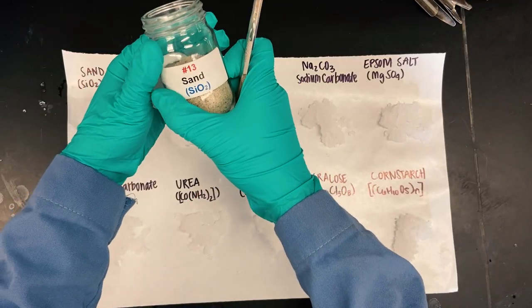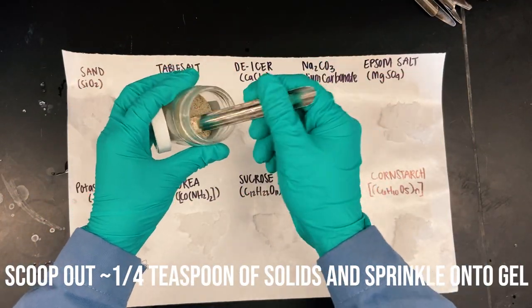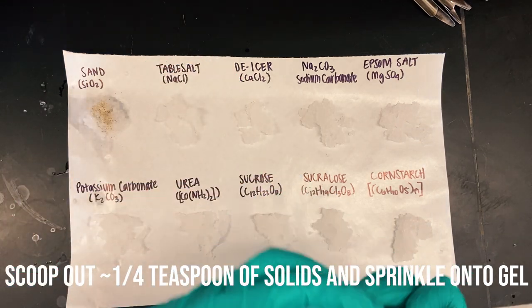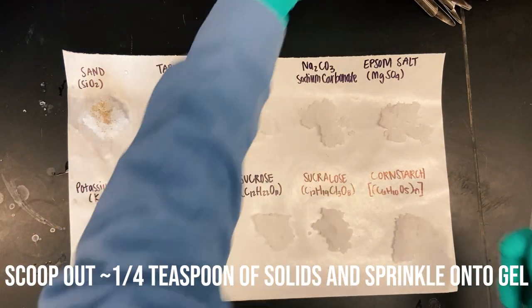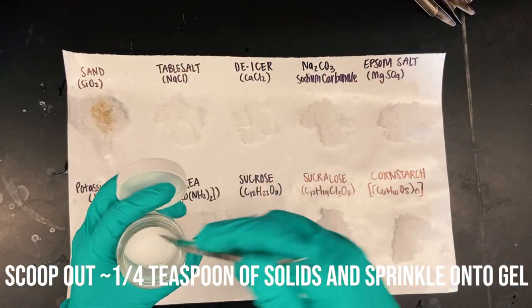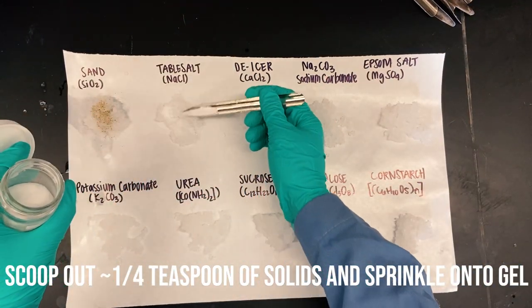So I'm going to start with sand. That's silicon dioxide, SiO2, and it's going to be about a quarter teaspoon of each solid onto the gel piles. So this is table salt, sodium chloride, or NaCl.